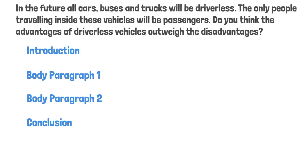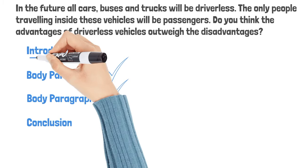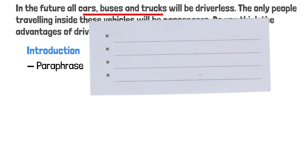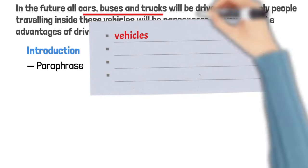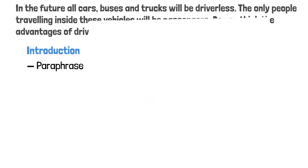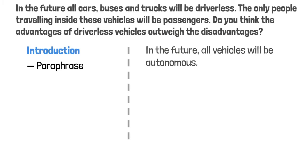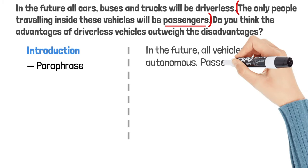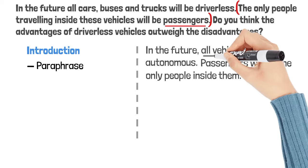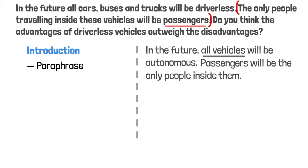Now let's go back to driverless cars. We've finished the two body paragraphs — let's move on to the introductory paragraph. In this paragraph, we can first paraphrase the question statement. I will change 'cars, buses, and trucks' to 'vehicles' and change 'driverless' to 'autonomous.' Self-driving cars are also called autonomous cars. So: 'In the future, all vehicles will be autonomous.' For the second sentence — 'The only people traveling inside these vehicles will be passengers' — I will rearrange the sentence elements, moving 'passengers' to the beginning: 'Passengers will be the only people inside them.' So it's almost the same vocabulary but different grammar.